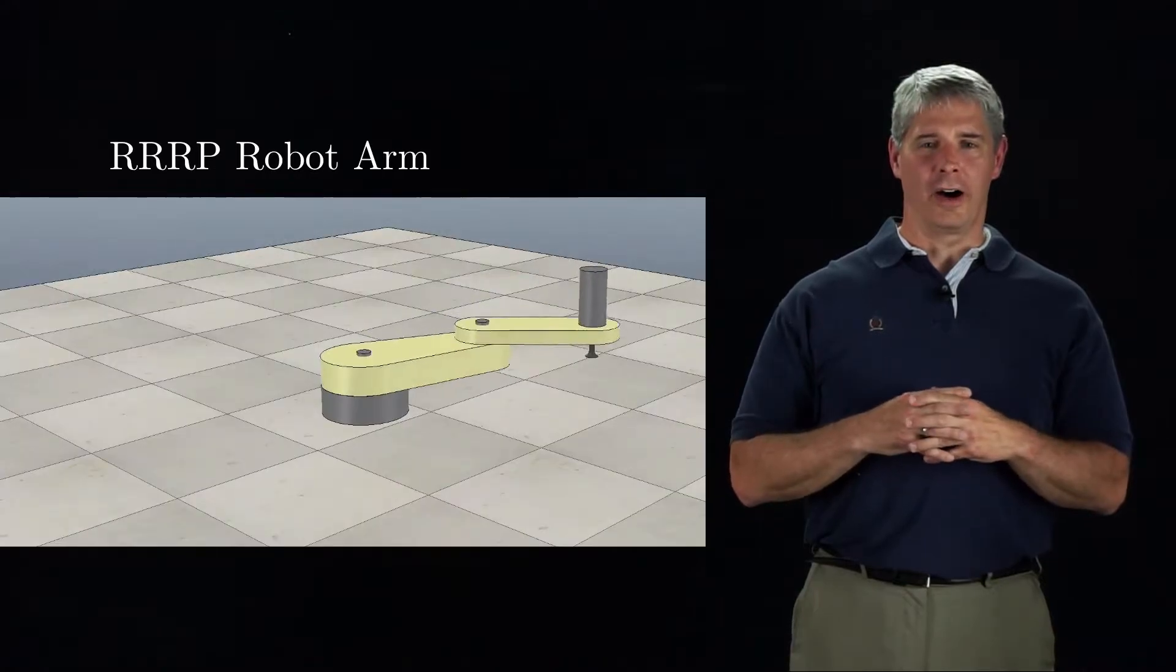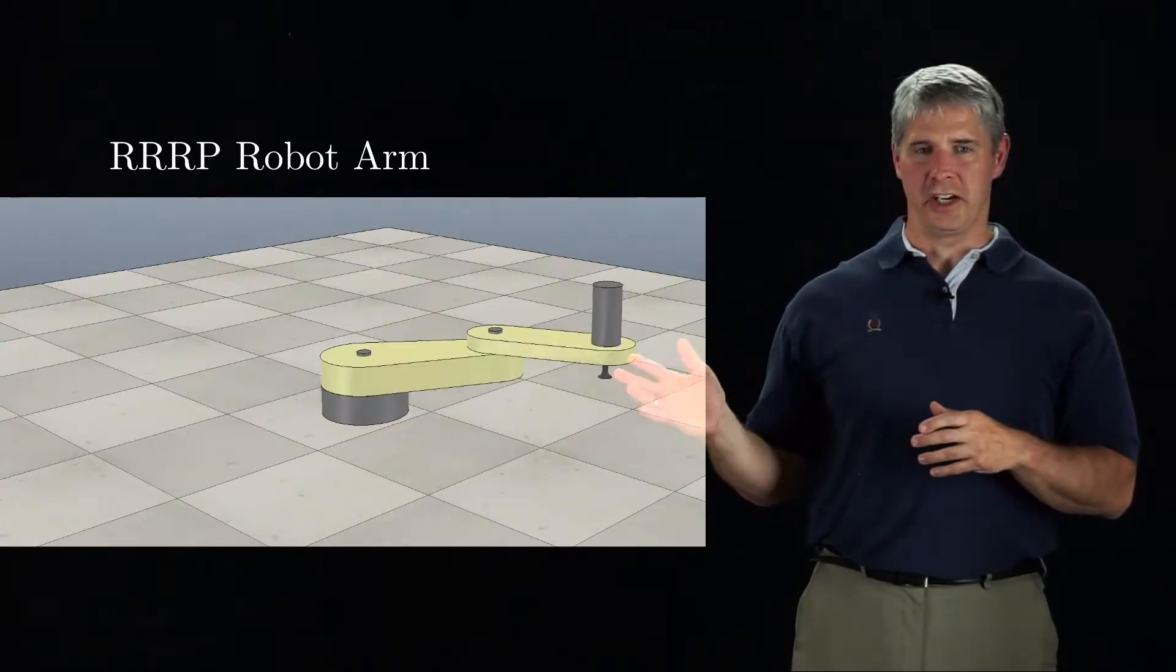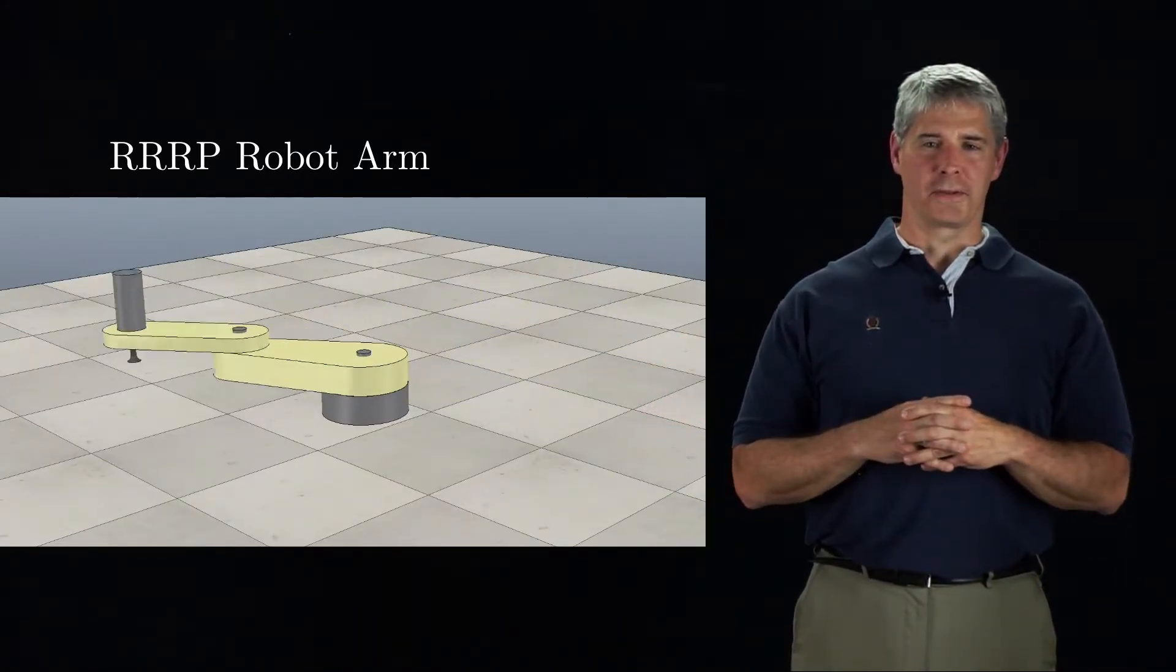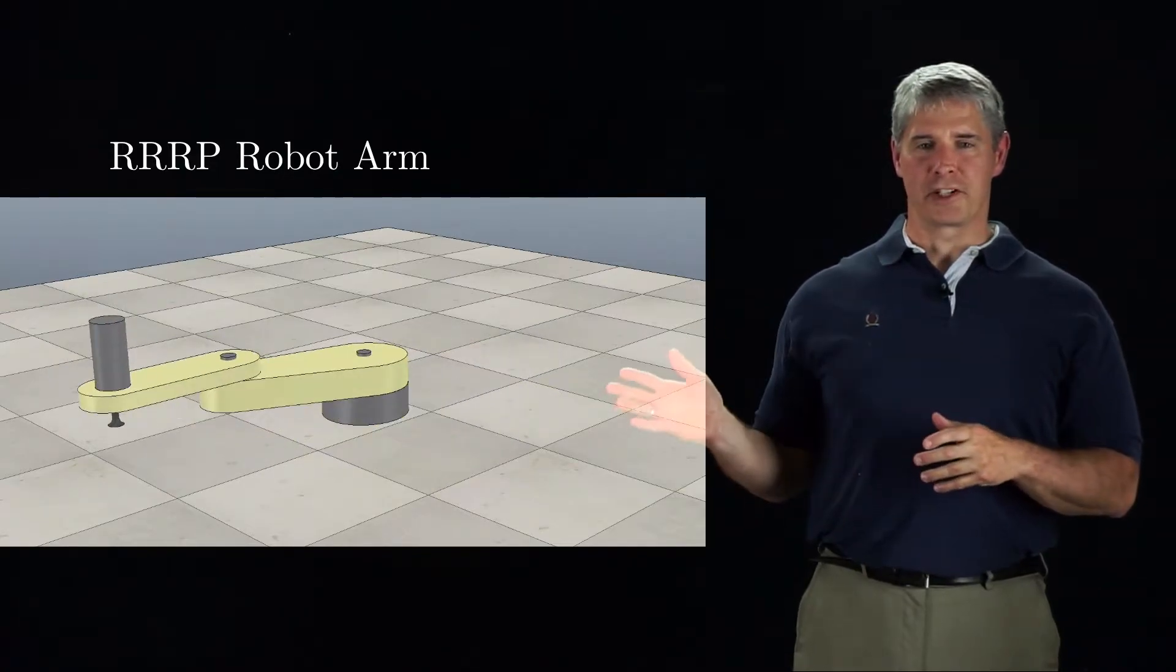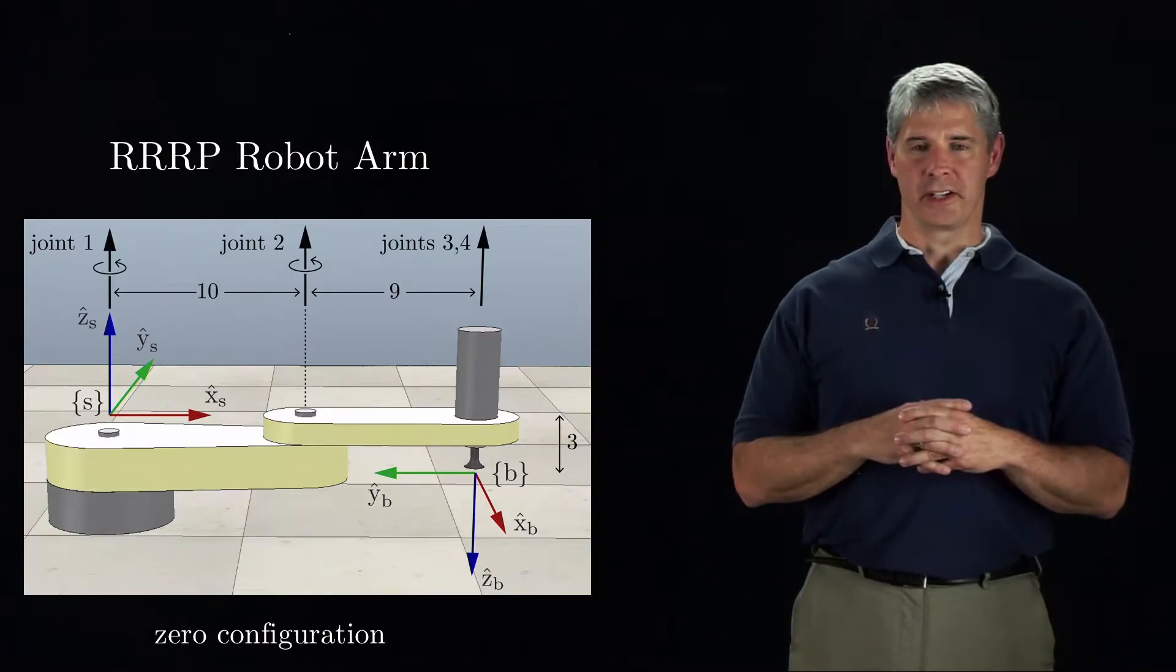The four-joint RRRP robot, like you see here, is a popular choice for certain kinds of assembly tasks. In this picture, we see it at its zero configuration.